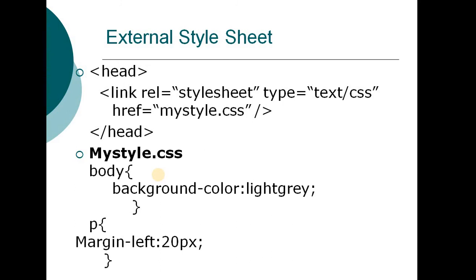You can change the content while keeping the same layout, because the layout is already set in the .css file. You link it using the link relation, and you can reuse that code across multiple files. This is the external style sheet — if you have multiple pages, you use one .css file and reuse it. You save the style sheet as a .css file and link it from each HTML file.